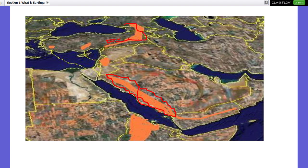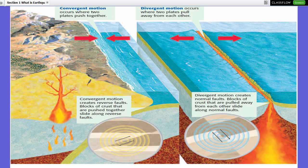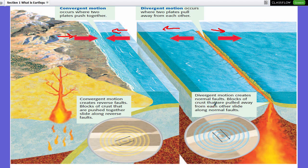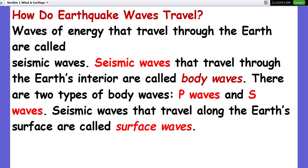Convergent motion is where two plates push together — the crust layers push into each other. Divergent motion is where plates move in different directions, away from each other. Convergent motion creates reverse faults, where blocks of crust pushed together slide along a reverse fault. Divergent motion creates normal faults, where blocks of crust pulled apart slide along a normal fault.